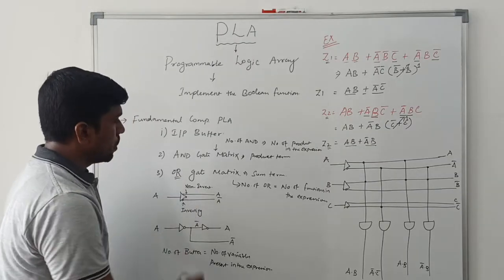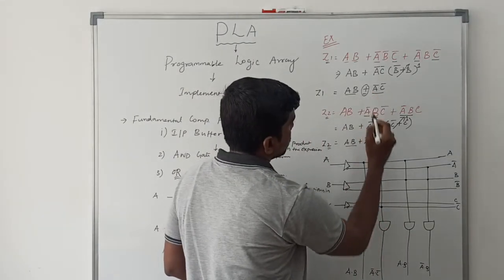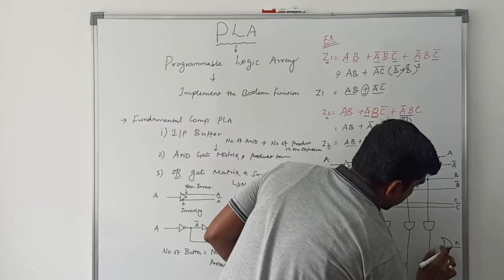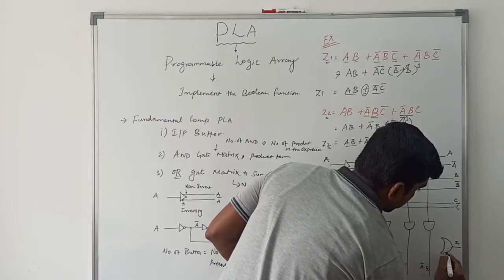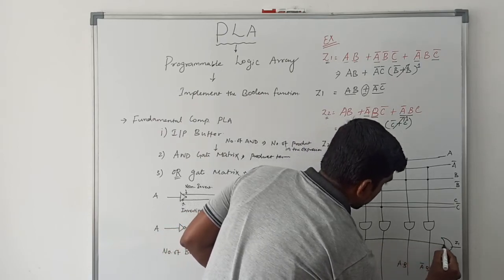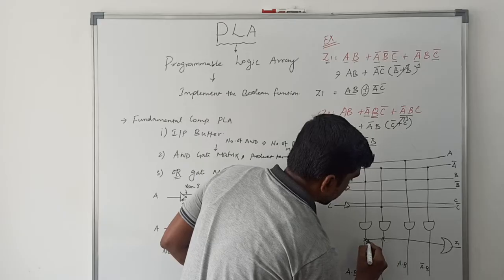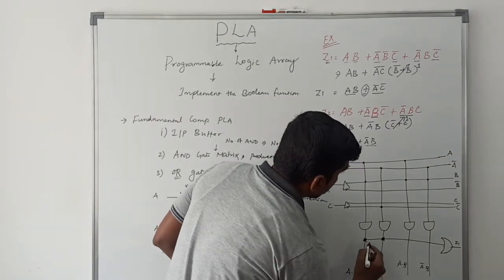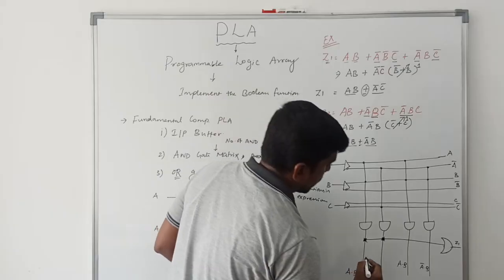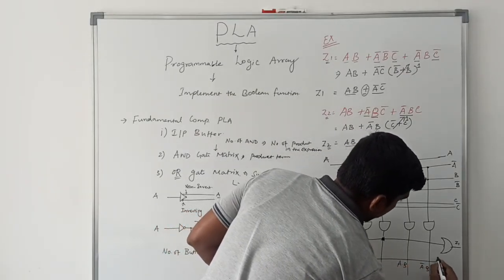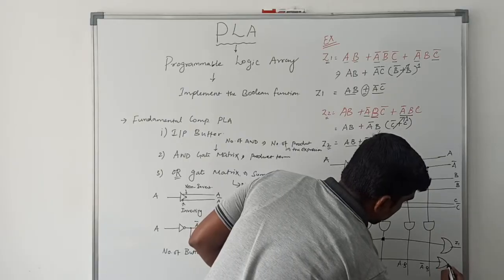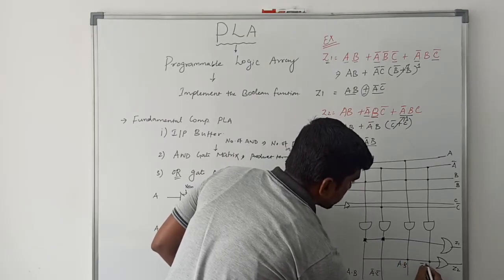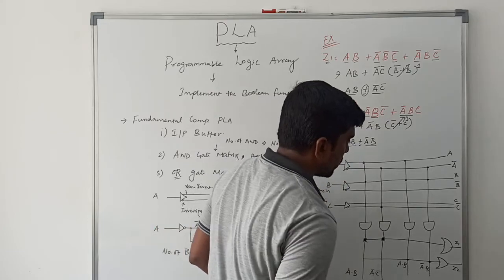Now go to the OR gate. For Z1, one function is present, so one OR gate is used. The two product terms AB and A̅C̅ are the inputs to the Z1 OR gate, giving output Z1. For Z2, one OR gate is also used, with inputs A·B and A̅·B, giving output Z2.